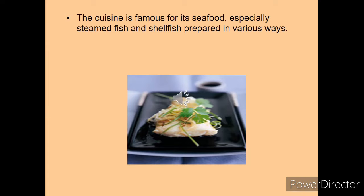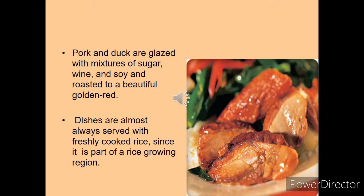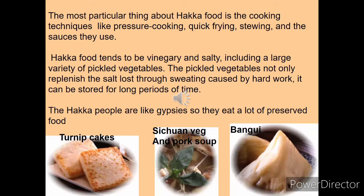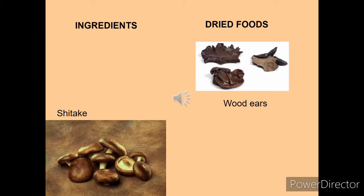The cuisine is famous for its seafood, especially steamed fish and shellfish prepared in various ways. Pork and duck are glazed with a mixture of sugar, wine and soy and roasted to a beautiful golden red. Dishes are served with rice, which is available in abundance due to the fertile soil. This region is also famous for its dimsums, with various flavors and fillings. Hakka food is notable for cooking techniques like pressure cooking, quick frying and stewing. Hakka food is very vinegary and salty, and they use a large number of pickled vegetables.